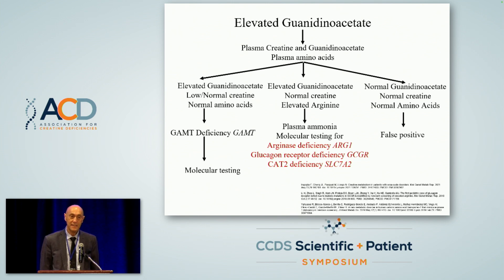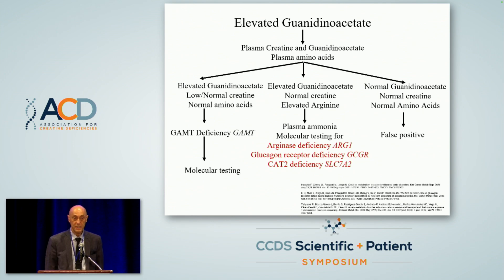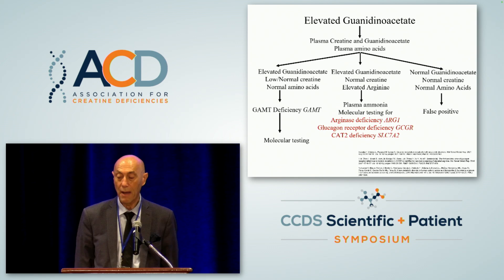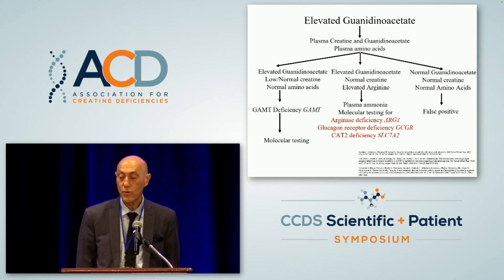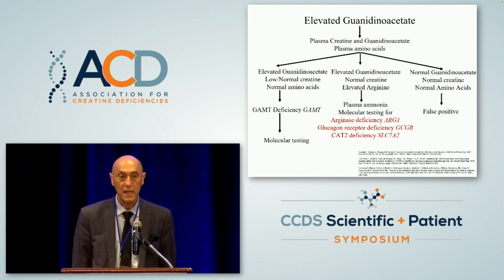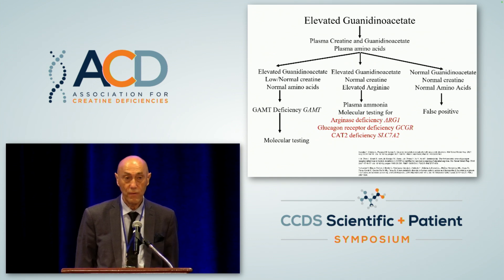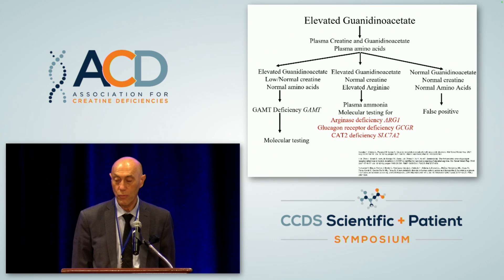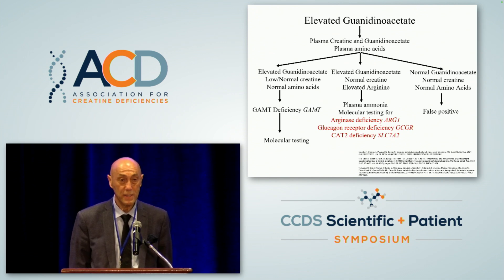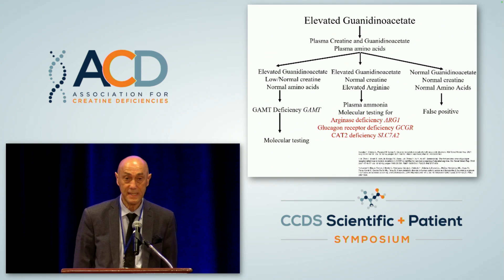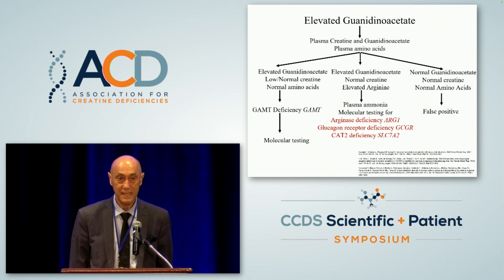The second condition is glucagon receptor deficiency, which is also much rarer than arginine deficiency. This condition is due to a lack of the receptor for glucagon — the hormone we use to raise blood glucose when we are not eating. The third condition is deficiency of the cationic amino acid transporter 2 (CAT2). In confirmatory testing for these conditions, guanidino acetate is elevated, creatine is totally normal, and arginine is elevated — which is why we need to do plasma amino acids.